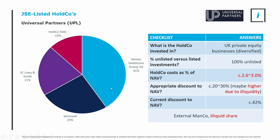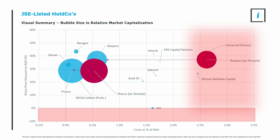Universal Partners: I don't want to linger too much on this. It's deeply illiquid, the majority of investments are in the UK, all unlisted, it's a very expensive holdco which implies quite a large appropriate discount. It is trading at a larger discount to net asset value, but that's probably also due to the illiquidity of the share. Our calculation of a discount against NAV doesn't always account for illiquidity, and Universal Partners has quite extreme illiquidity.